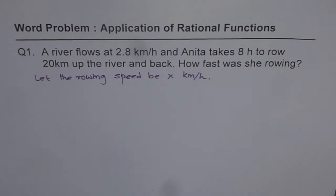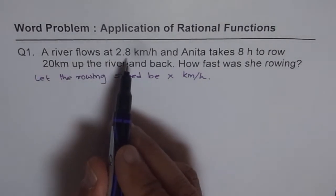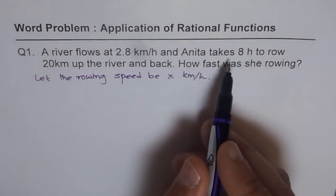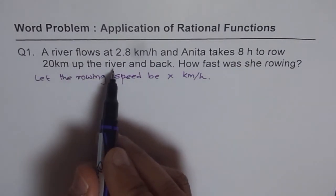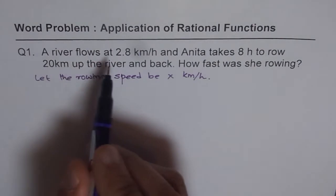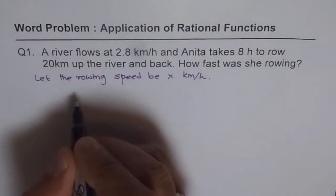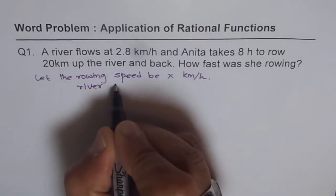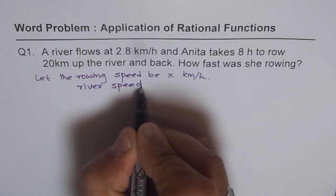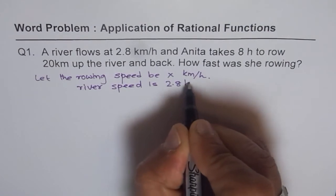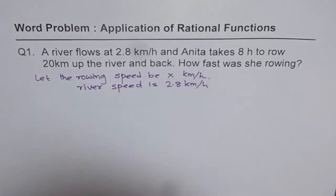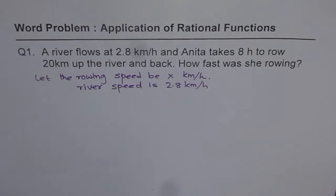After that, read the problem and see what is given to you and what you need to find. A river flows at 2.8 kilometers per hour and Anita takes 8 hours to row 20 kilometers up the river and back. So river speed is given as 2.8 kilometers per hour.